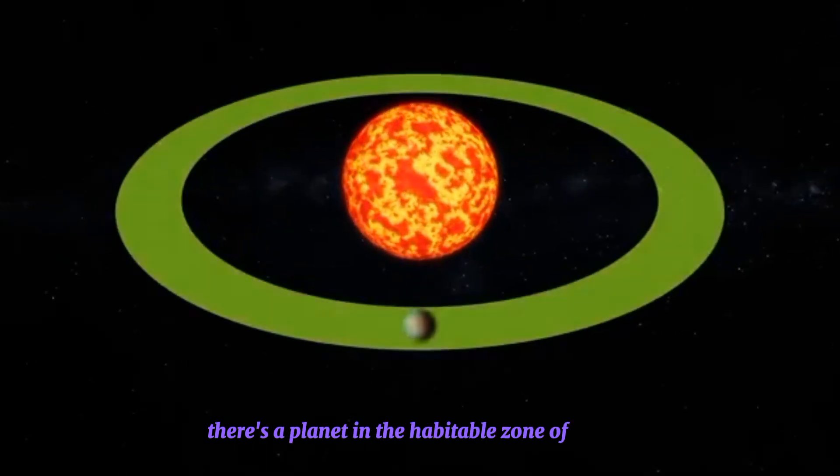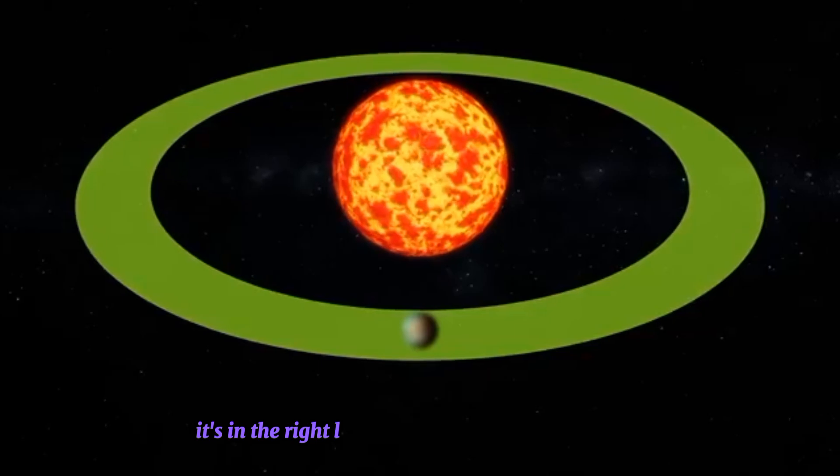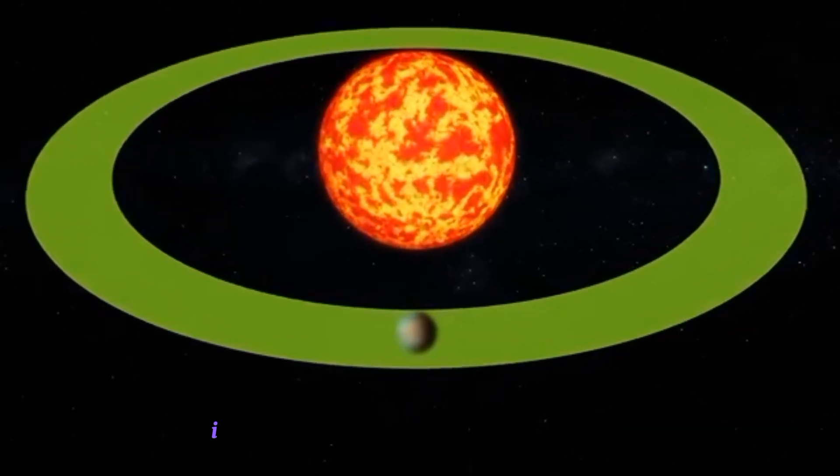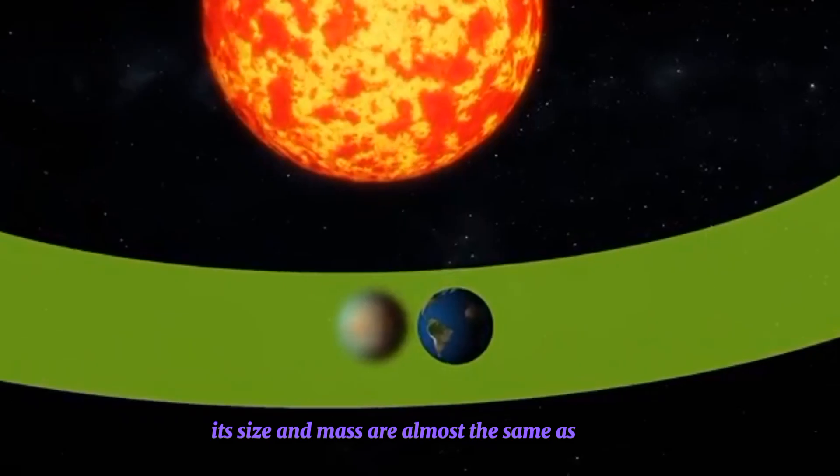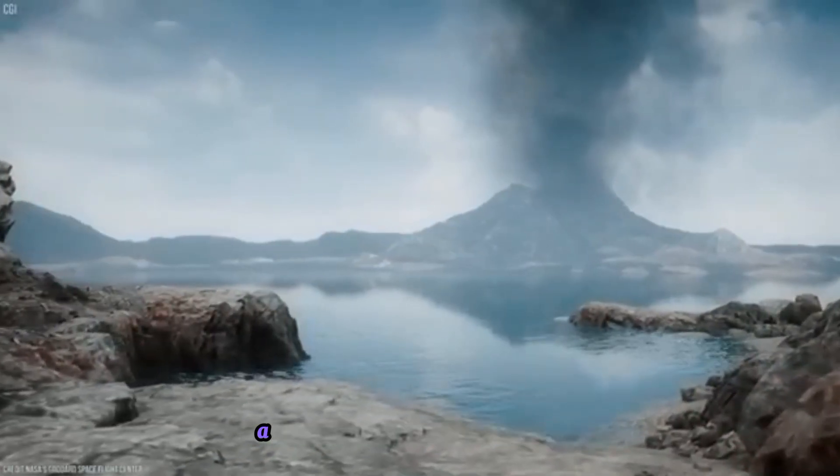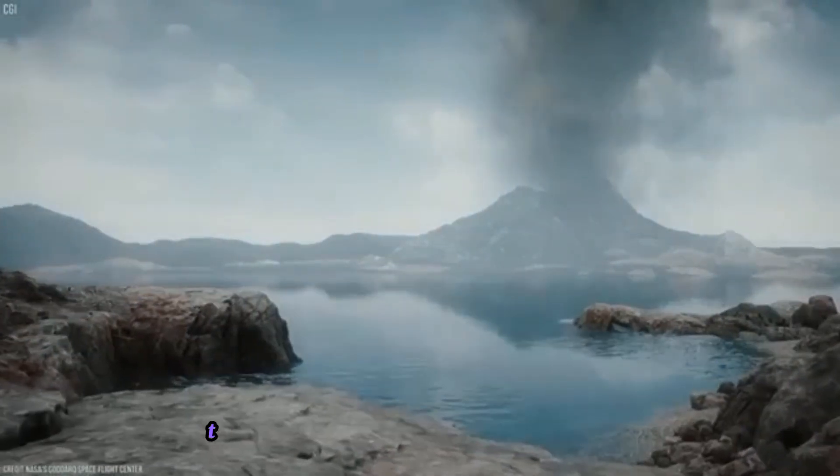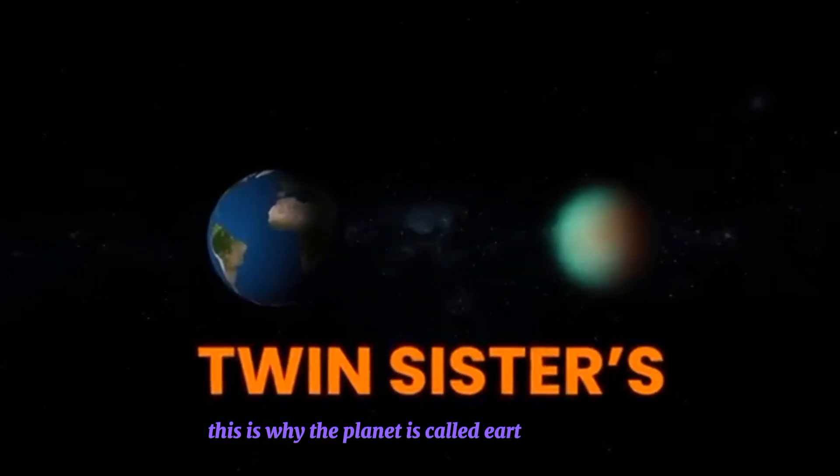There's a planet in the habitable zone of its star, meaning it's in the right location to potentially support life. Its size and mass are almost the same as Earth, and even the materials on its surface are similar to what Earth is made of. This is why the planet is called Earth's twin sister.